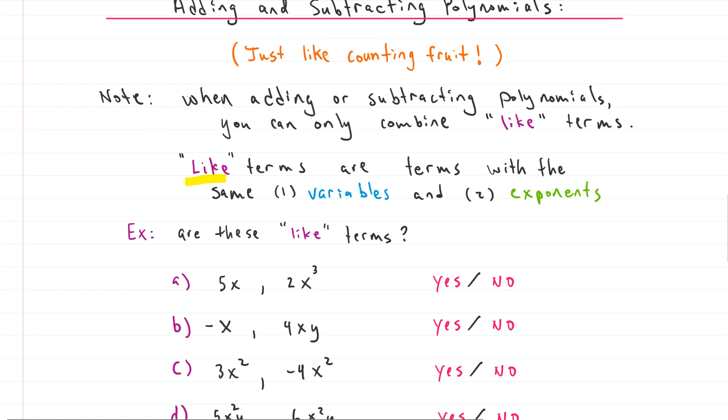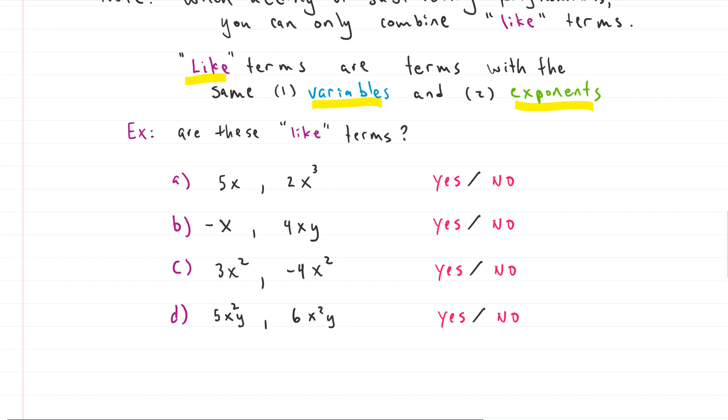We can only combine together terms that are like terms. And like terms must satisfy two conditions. The term must have the same variables, variable or variables if they're more than one. And those variables have to have the same exponents. So let's see if we can distinguish like from not like terms.